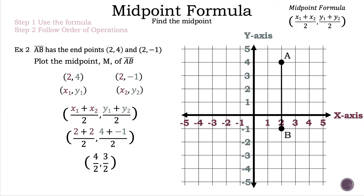Let's continue to simplify. 4 divided by 2 is 2, and 3 divided by 2 is 1.5. So our midpoint M is 2, 1.5. Let's plot point M on segment AB — point M is in the middle of segment AB.